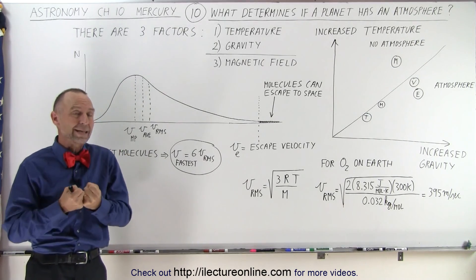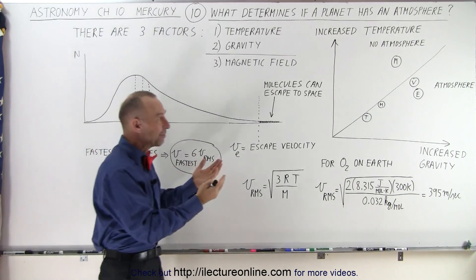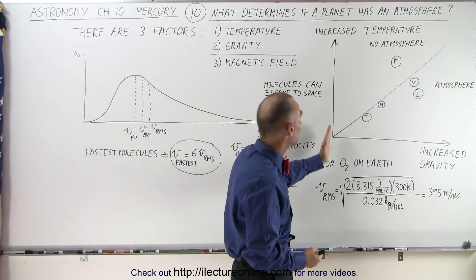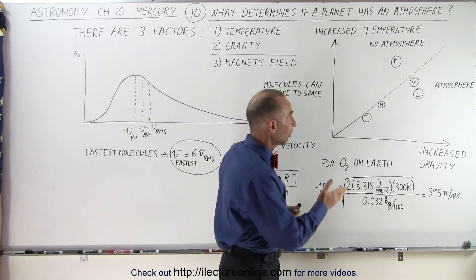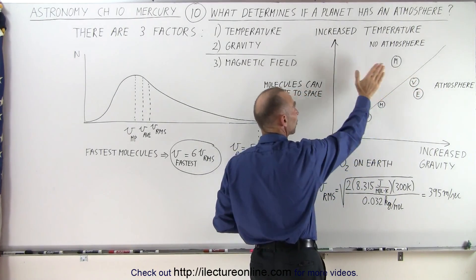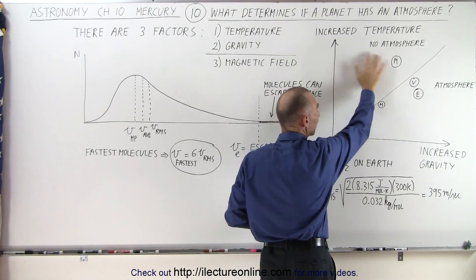So here we have a graph that depicts the relationship between increased gravity versus increased temperature. There's a line that goes diagonally across, and notice that if any planet falls on this side of the diagonal line, there will not be an atmosphere.